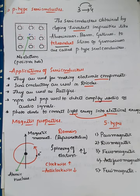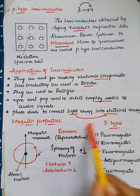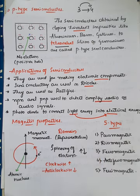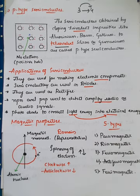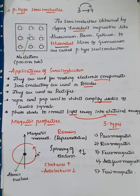Photo diodes are used in solar lamps, solar street lights, and solar water heaters to convert light energy into electrical energy. These are some of the important applications of semiconductors. That is all about the electrical properties in case of solids.